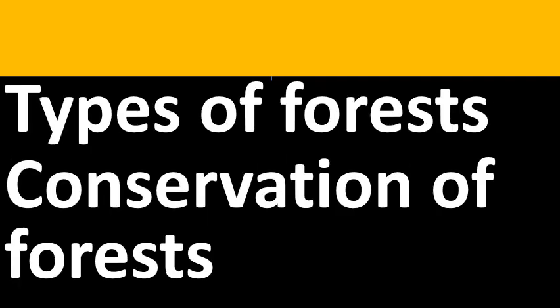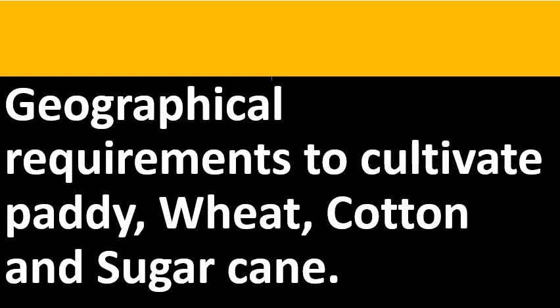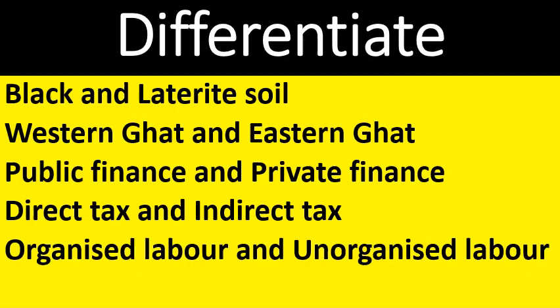Types of forest, conservation of forest, and why deforestation is taking place nowadays. Types of agriculture, land use and the factors affecting it. Geographical factors required to cultivate paddy, wheat, cotton, and sugarcane. Also differentiate Western Ghats and Eastern Ghats. Public finance and private finance, direct tax and indirect tax, organized labor and unorganized labor must be learned without compromise.